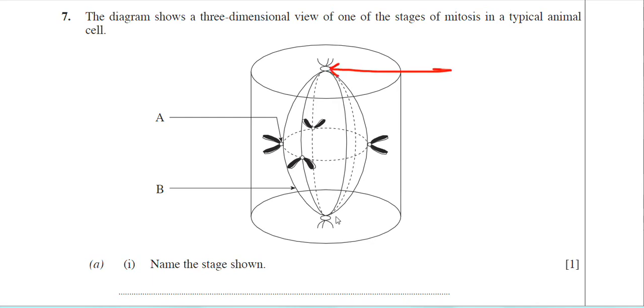The top bit here and the bottom bit are actually the poles of the cell. In the middle, you have the equator there. So the chromosomes appear to be sitting on the equator region of this cell. The stage of cell division here is going to be metaphase.